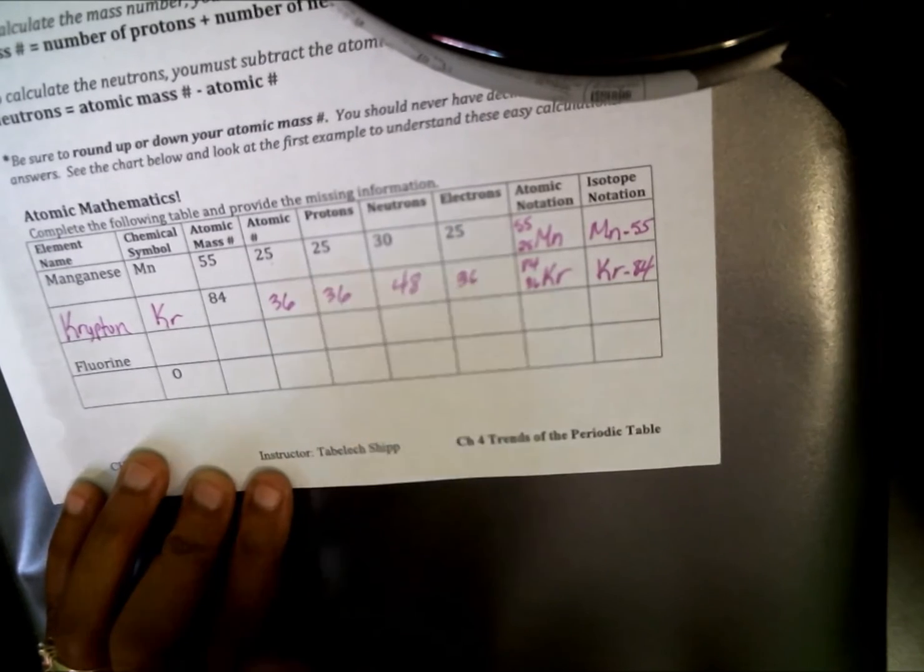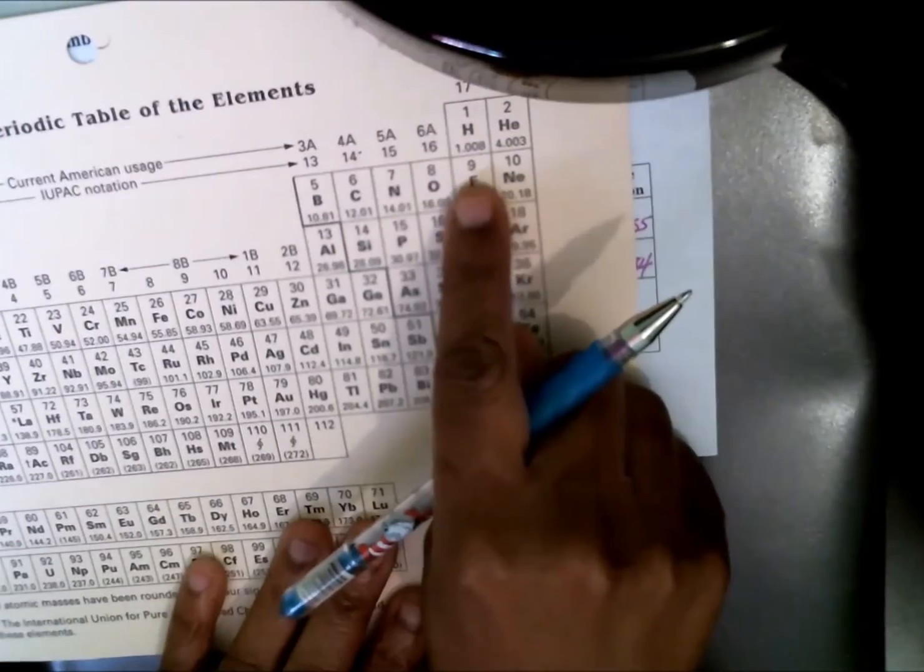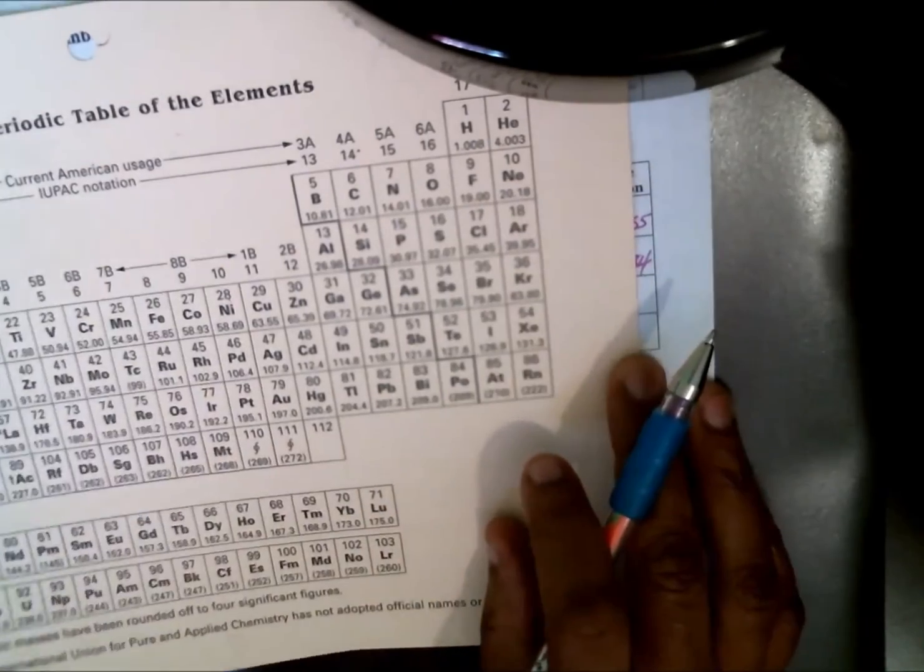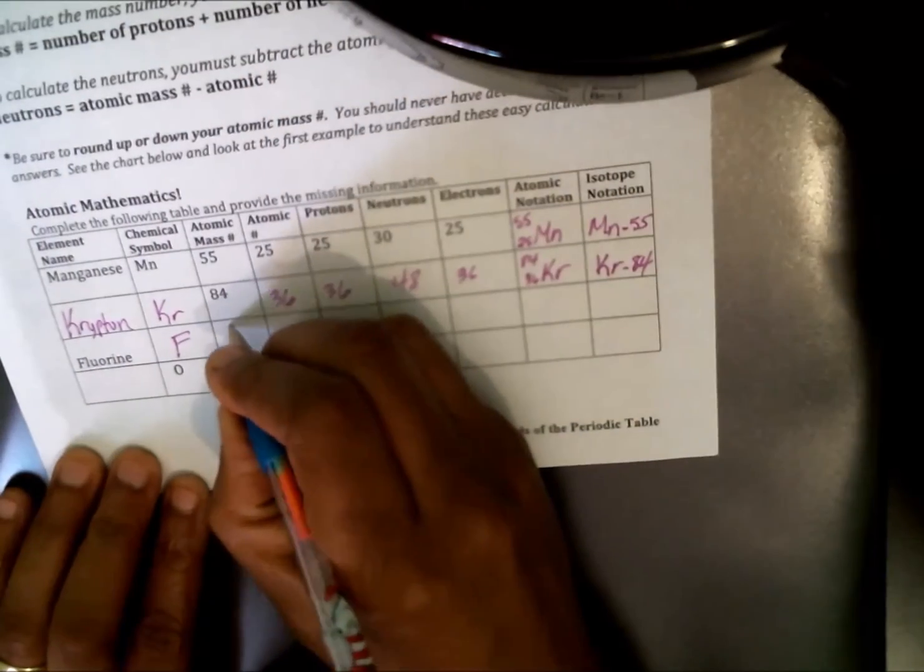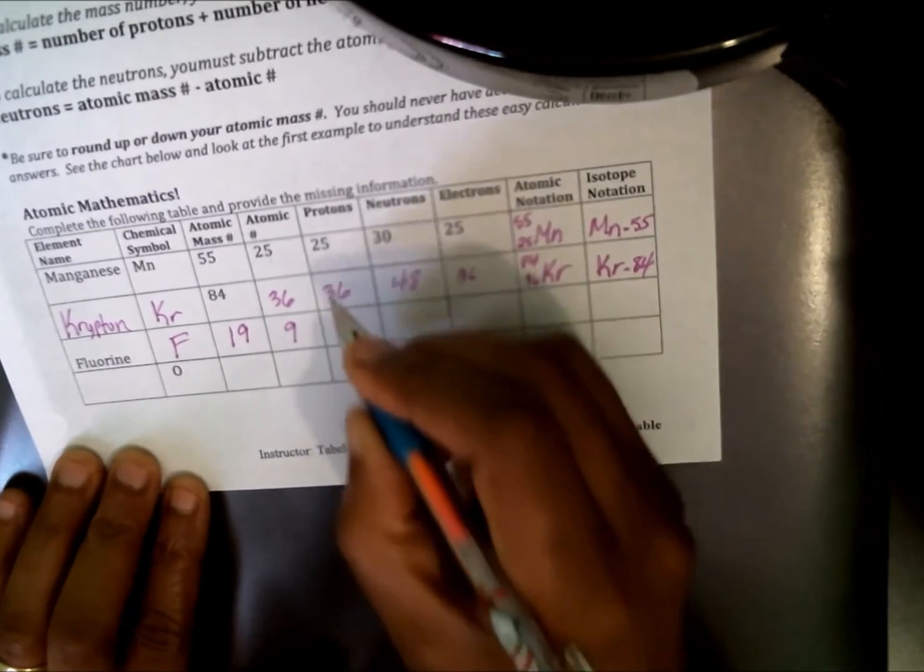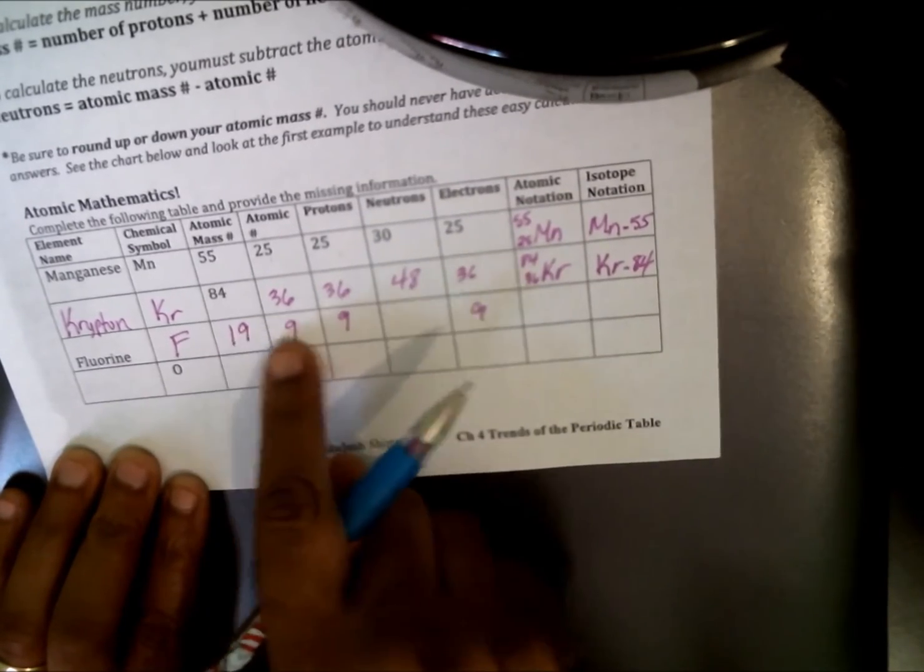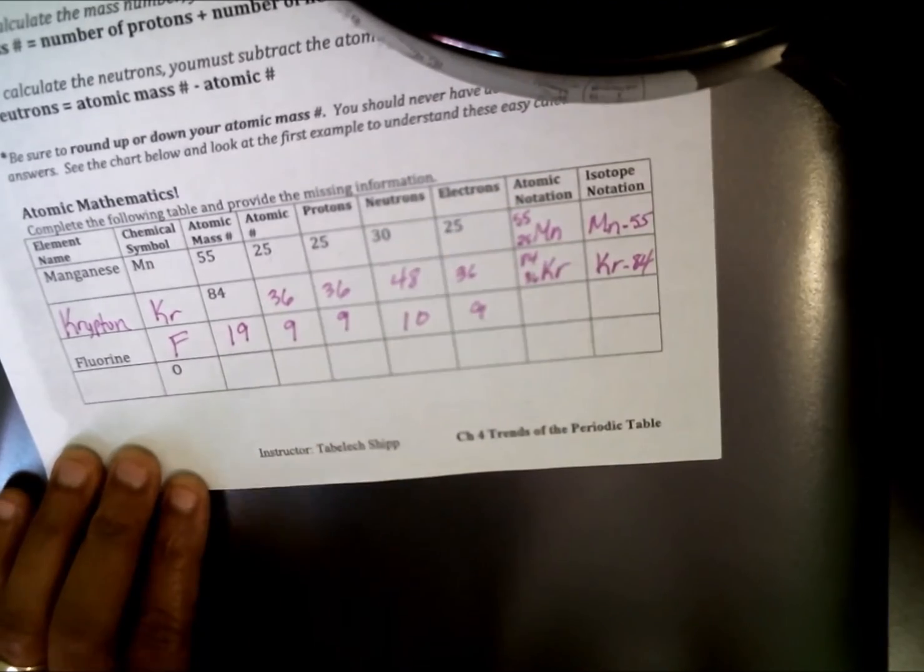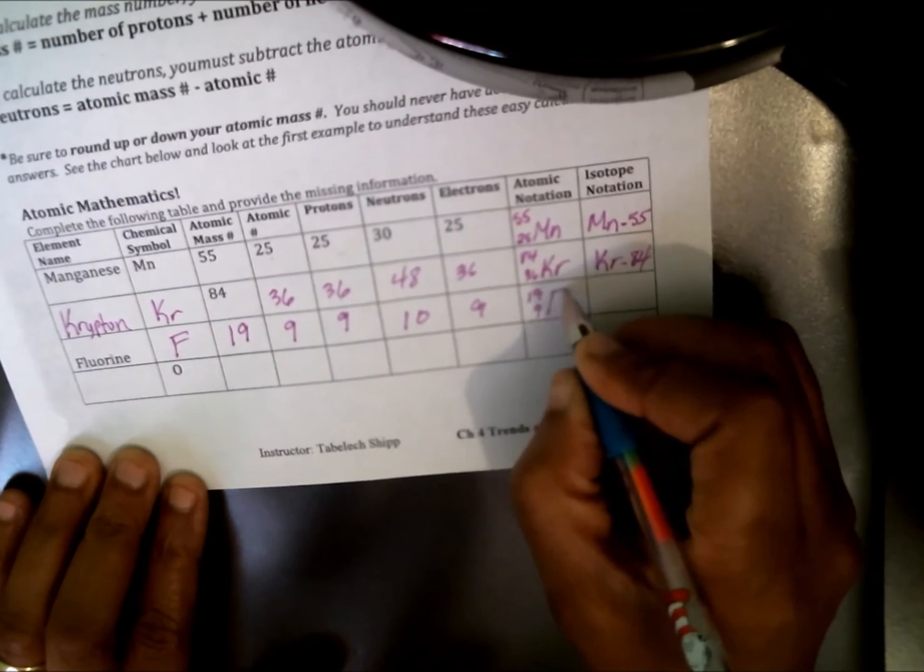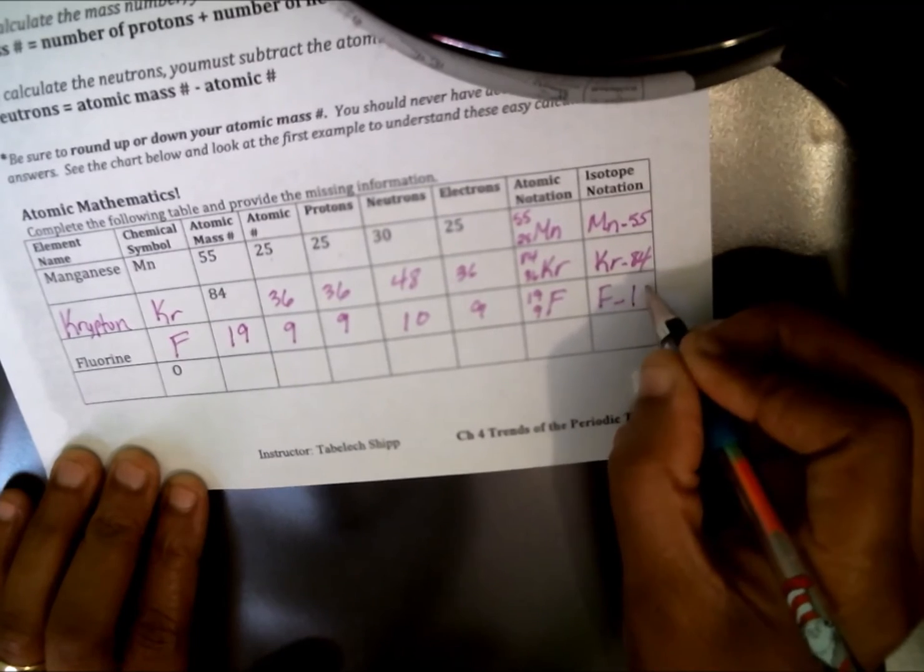So that's where the 84 comes from. So I know it's krypton. Symbol is Kr. I've already provided you with the 84. The atomic number is 36. Protons is 36. And electrons is 36. Remember, atomic number, protons, electrons all have the same number. So you're just going to repeat that three times. The last example here for neutrons is to simply subtract these two columns together and you end up with 48. My atomic notation is 84 on the top, 36 on the bottom, Kr. My isotope notation is Kr dash 84. Let's do fluorine. Fluorine symbol is F. I need to look at my periodic table and find fluorine, which is right here. I have two numbers. I have 19 and I have nine. Remember, the number with the decimals is the atomic mass number. So therefore, I'm going to put 19 for the mass number.